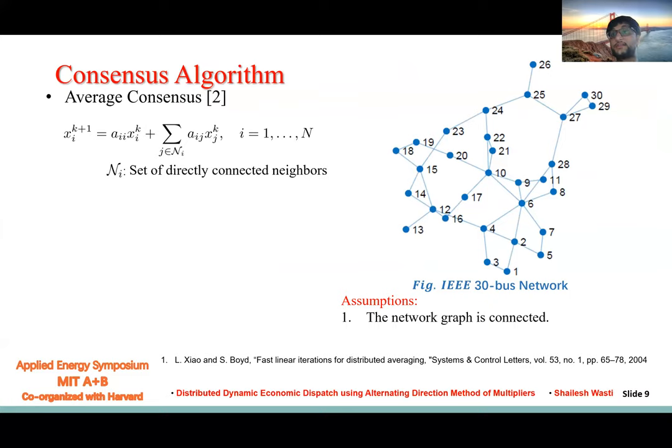And consensus. If you think of the electric grid as a connected graph, like in the figure, then any node can estimate the average of the network based on the information of its neighbors. That's what distributed means. For example, node 1 has the information of node 2 and node 3, and it can estimate the average of the entire network.